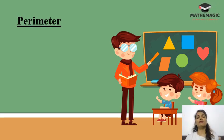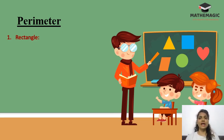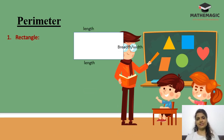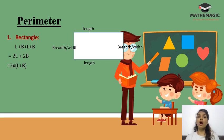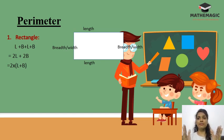Let's check out the formula for finding the perimeter of different shapes. The first shape is a rectangle — a four-sided figure with two lengths and two breadths. So the perimeter, the distance around the boundary, will be length + breadth + length + breadth, or 2 × length + 2 × breadth. Taking 2 as common, the formula becomes 2 × (length + breadth).